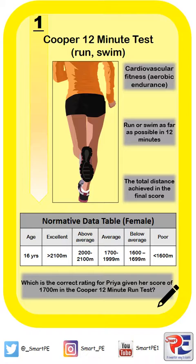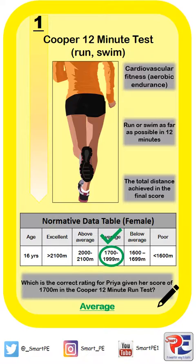OK, let's see the answer that you should have got. So, first of all, I'm looking for the score that Priya achieved — we know that Priya achieved 1,700 metres in her Cooper 12 minute run test. I'll then look for that value range, that data range, in the table and highlight it. I'll then look above and see the rating and highlight that as well. If you're able to do that, the correct answer you should have got would be a final rating of average.